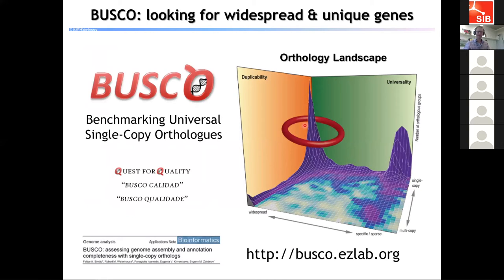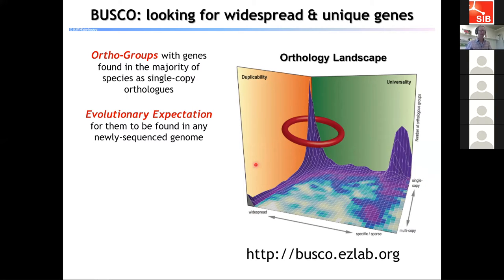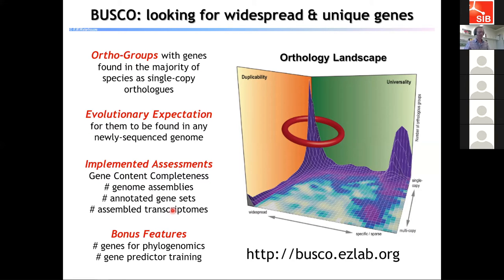The benchmarking universal single copy orthologs sit at the peak in the back corner — mostly single copy and very widespread — found in the majority of species as single copy orthologs. This gives rise to the evolutionary expectation that for any newly sequenced genome, you should be able to locate and annotate orthologs of these genes. BUSCO implements assessments in three forms: completeness of genome assemblies, annotated gene sets (protein sequences from your annotation), and assembled transcriptomes from RNA-seq experiments. Bonus features include that BUSCOs are ideal markers for phylogenomics analyses.